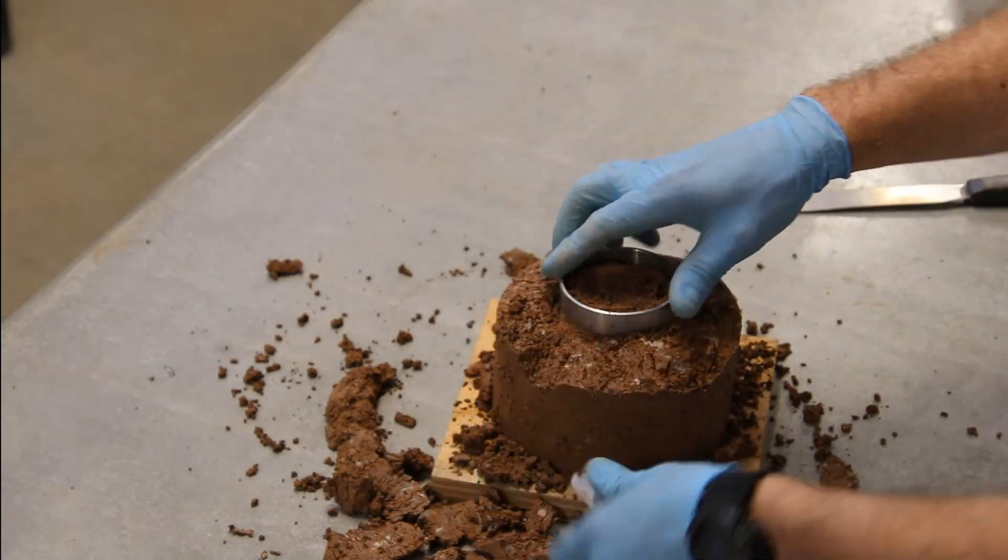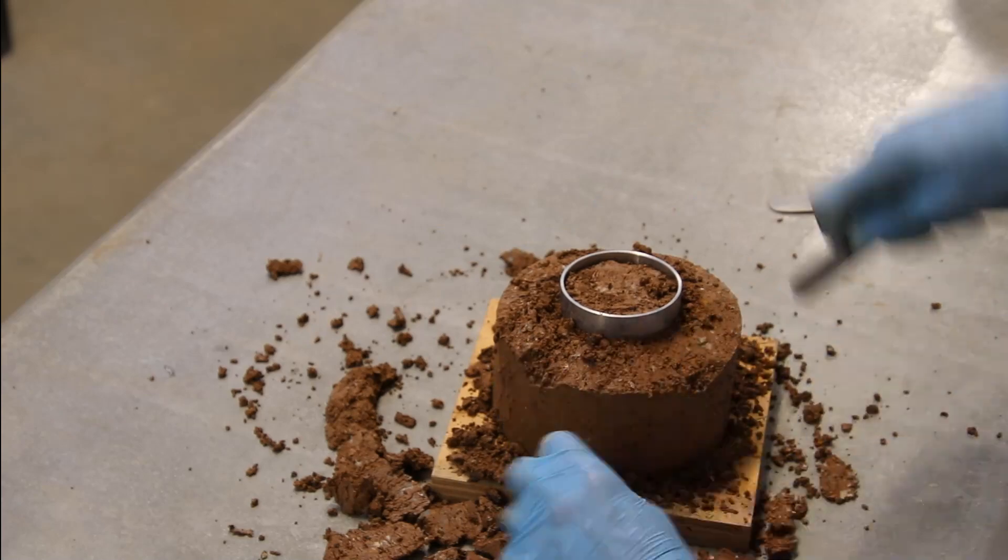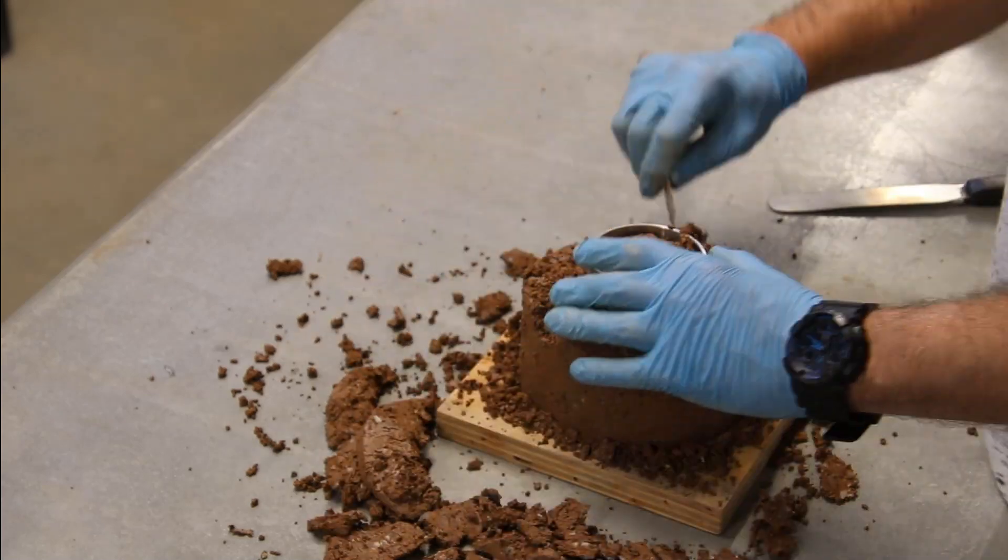Scrape around the confining ring methodically to remove soil and gently press down on the confining ring. Move slowly and carefully when scraping around the sample.